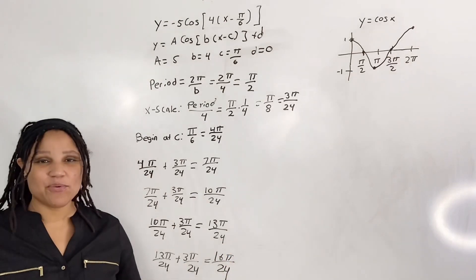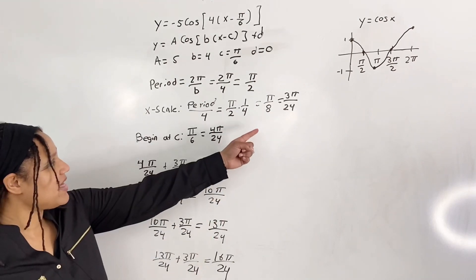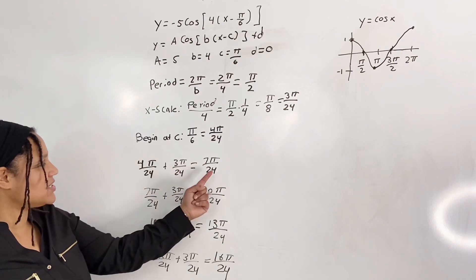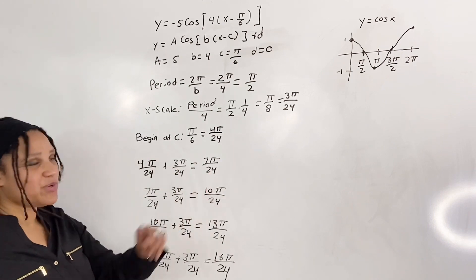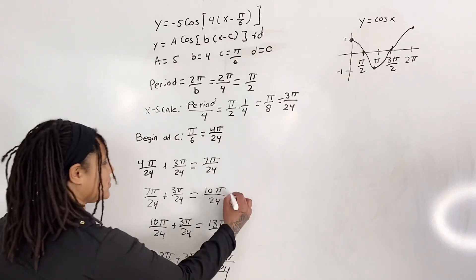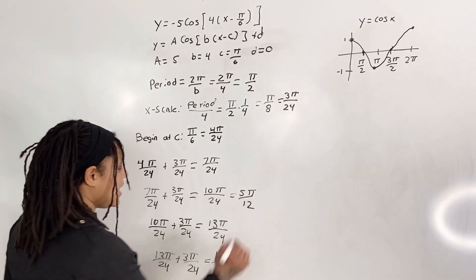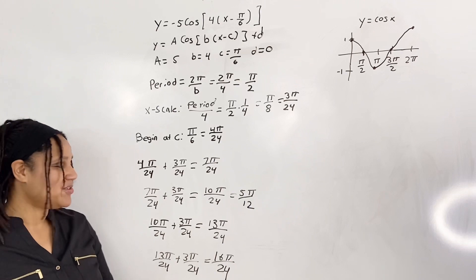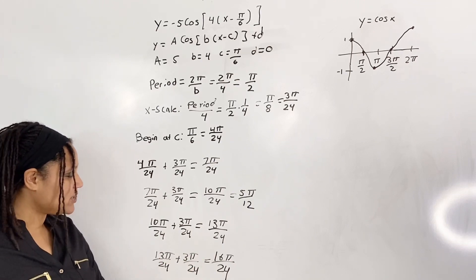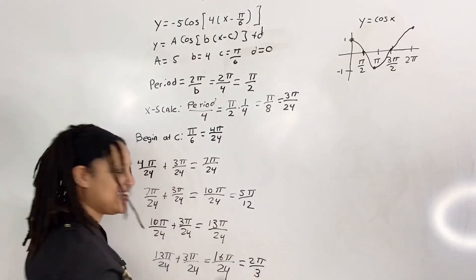Now we reduce our fractions. 4 pi over 24 reduces to pi over 6. 7 pi over 24 stays as is. 10 pi over 24 reduces to 5 pi over 12. 13 pi over 24 does not reduce. And 16 pi over 24 reduces to 2 pi over 3.